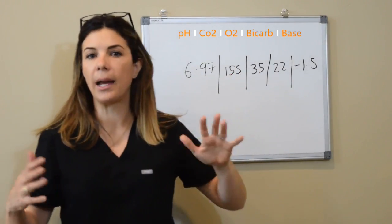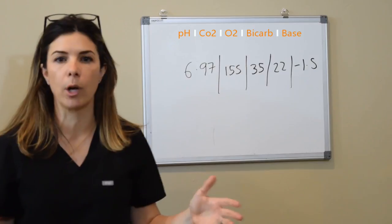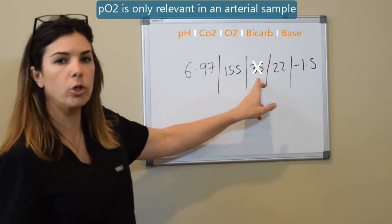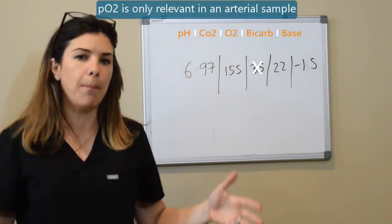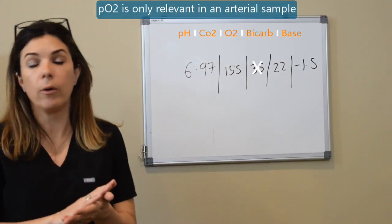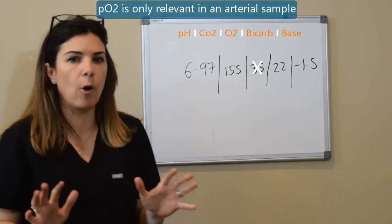First of all, I don't know if this is arterial, venous, or capillary. So for the time being I'm going to ignore the oxygen, the PO2, because really that only matters if it is an arterial sample. For now I'm going to concentrate on everything else.